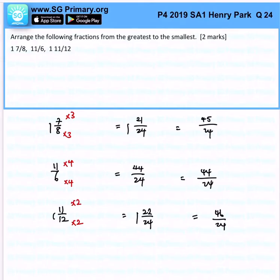Since we have to arrange from the greatest to the smallest: this is number one, subsequently this is two, and then this is three.